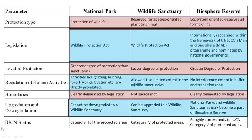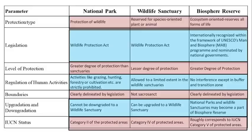According to IUCN status, all these national parks, wildlife sanctuaries, and biosphere reserves are created per IUCN guidelines. According to the IUCN list, national park is a Category 2 protected area, wildlife sanctuary is Category 4, and biosphere reserve is Category 5. These are the main differences between the different types of in-situ conservation methods — national park, wildlife sanctuary, and biosphere reserve.